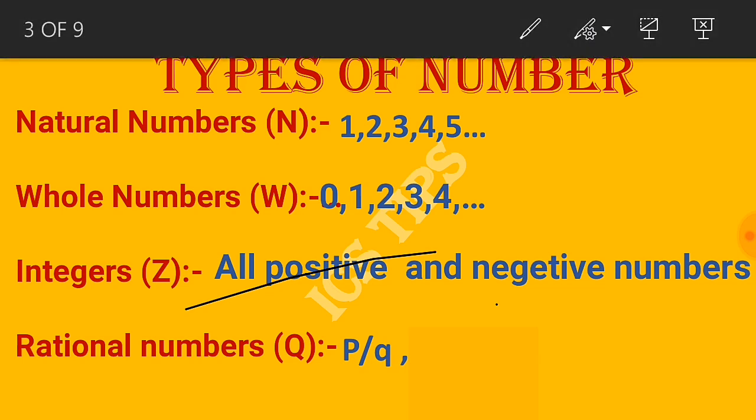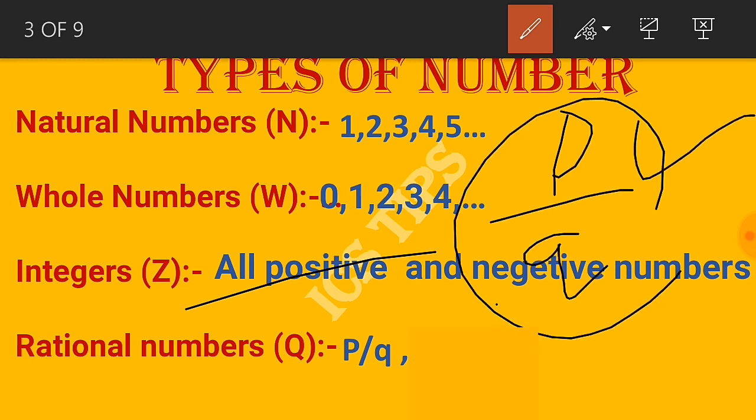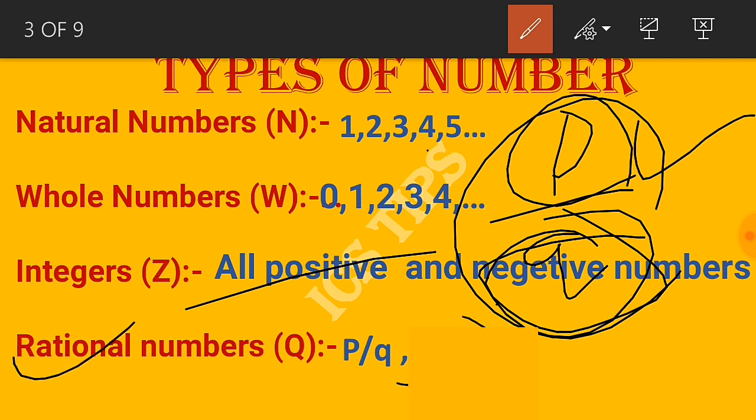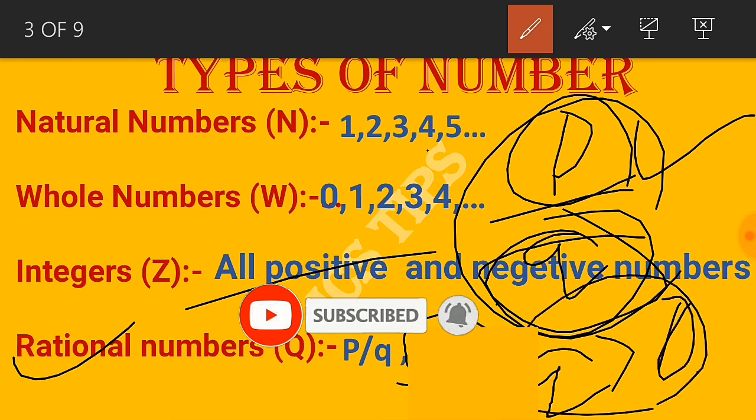Rational numbers are numbers that can be expressed in the form P by Q, where P is the numerator and Q is the denominator. Q cannot be zero - the denominator must be greater than zero.